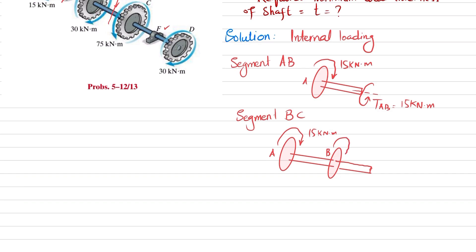Again you have 15 kilonewton-meter at this point, this is your B where you have a torque of 30 kilonewton-meter. So total is 45. In order to keep it in equilibrium, we will have TBC equal to 45 kilonewton-meter.